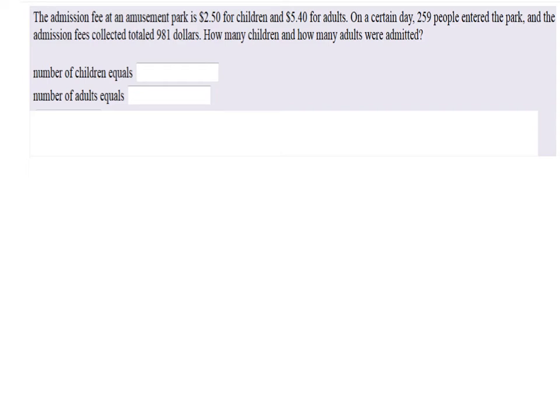The admission fee at an amusement park is $2.50 for children and $5.40 for adults. On a certain day, 259 people entered the park and the admission fees collected totaled $981. How many children and how many adults were admitted?